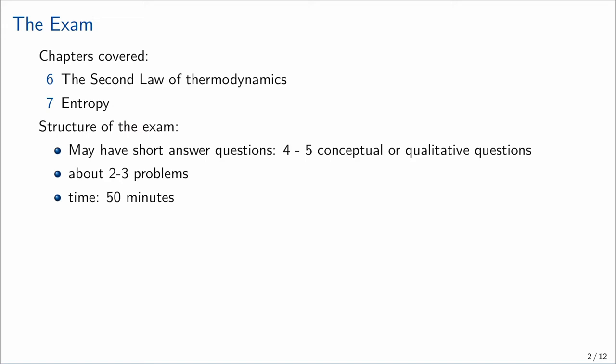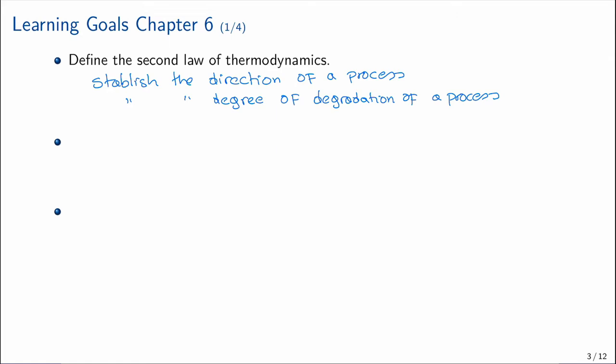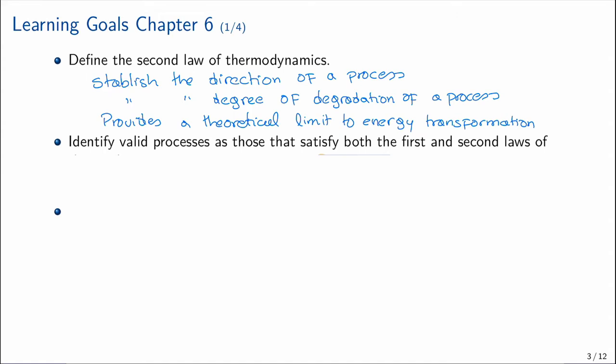The exam will cover Chapter 6: Second Law of Thermodynamics, and Chapter 7: Entropy. There will be some short conceptual questions and two or three problems. The total time is 50 minutes. The first learning goal for Chapter 6 is to define the second law of thermodynamics, which establishes the direction of a process, the degree of degradation, a theoretical limit to energy transformation, and identifies valid processes satisfying both the first and second laws.